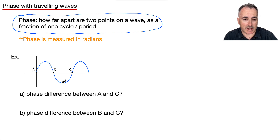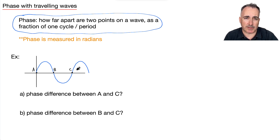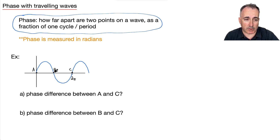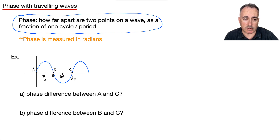Let's say we're given a graph like this, and the question is: what's the phase difference between A and C, and what's the phase difference between B and C? I first need to label the graph. This end here will be two pi — that's one whole cycle. Half of that is pi, and half of that is pi over two. Counting up: one pi over two, two pi over two, three pi over two.